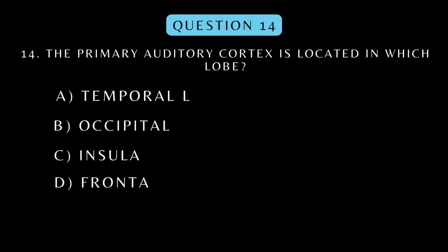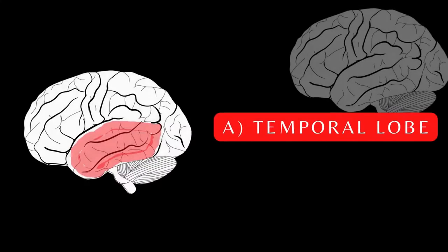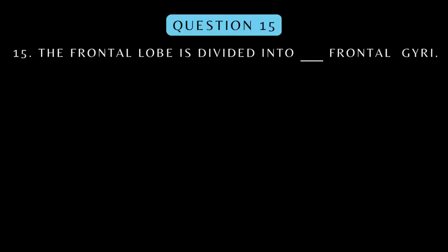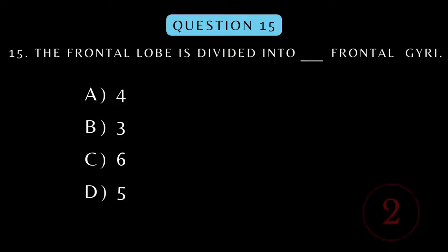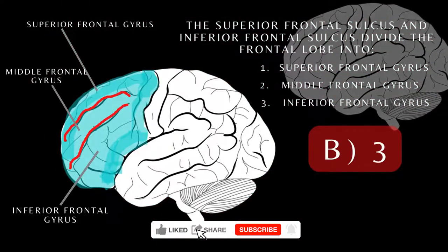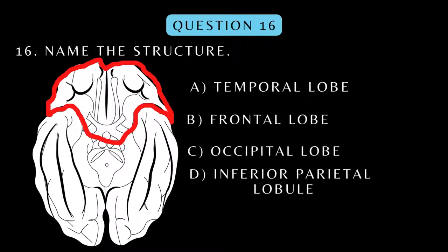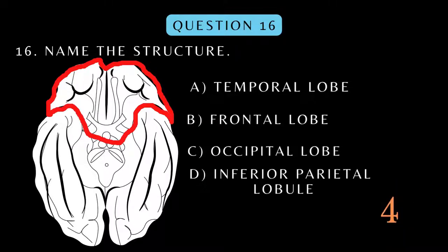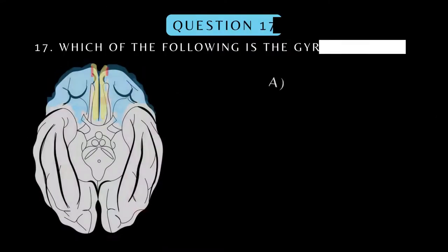The primary auditory cortex is located in which lobe? The frontal lobe is divided into blank frontal gyrus. Name the structure. Which of the following is the gyrus rectus?